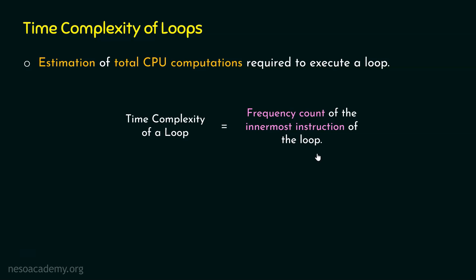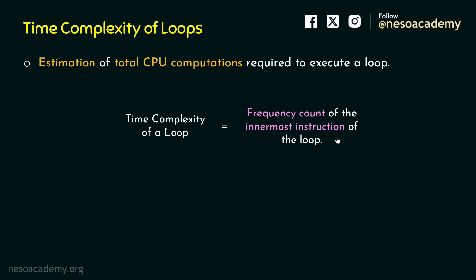We just need to focus on the innermost instruction of the loop and determine how many times it has been executed — that tells us the time complexity of the loop. Calculating the sum of frequency count of each instruction is not needed because there is only a constant difference between the sum of all instruction frequency counts and the frequency count of the innermost instruction. Since we represent time complexity using asymptotic notations, we eventually eliminate constants. So we just need the frequency count of the innermost instruction.